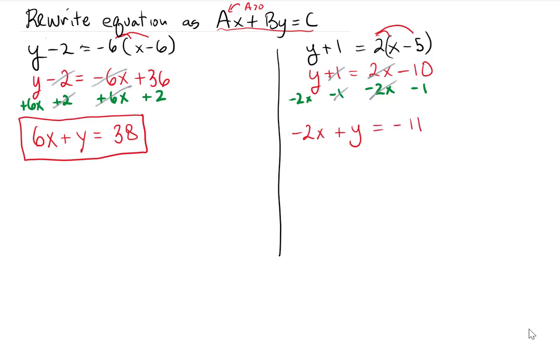And I believe that this is good enough for the software we're using, but again, I want to do this one extra thing where we make sure that our a is always bigger than 0. So I'm going to multiply through by negative 1 to make everything opposite signs. So the negative 2x becomes 2x, the plus y becomes a minus y, and the negative 11 becomes a positive 11. So in many, in some textbooks, this is the required form: 2x minus y equals 11.